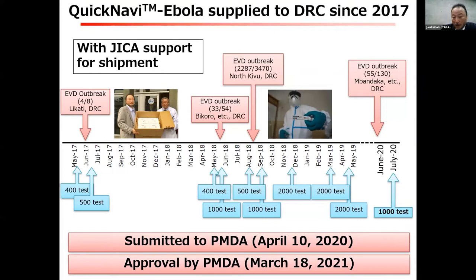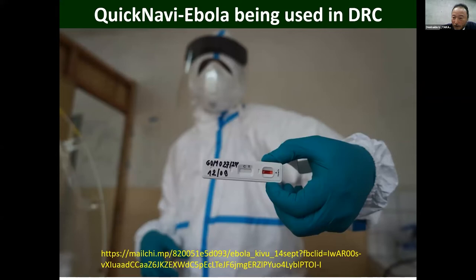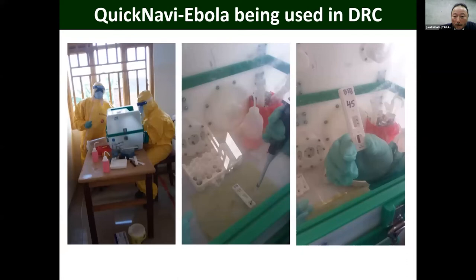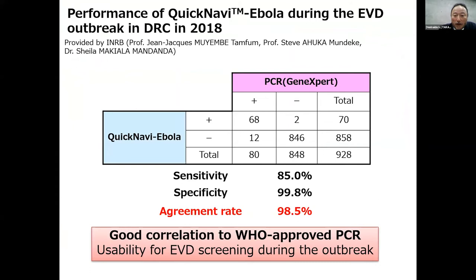They had stored Ebola samples and we tested them. We were able to see the lines appear — this can be done within 10 to 20 minutes. You can store this at room temperature for a year, no electricity is needed, and it can be used in remote areas. We demonstrated the kit on site and they decided to adopt it. For pre-screening, WHO's PCR kit is still required for differential diagnosis, but they decided to introduce this kit for that initial step. Every time an outbreak occurs, through JICA we sent kits to DRC, and we have clinical data obtained at the time. This has now been approved by PMDA Japan.